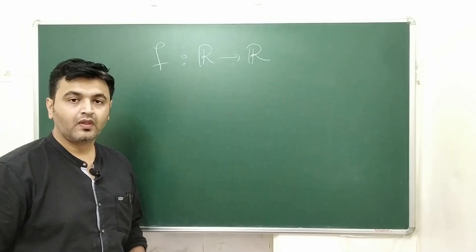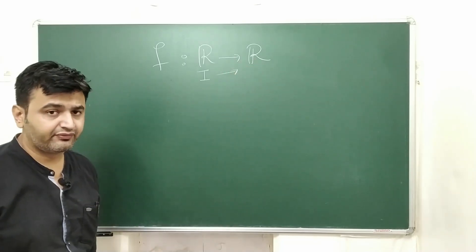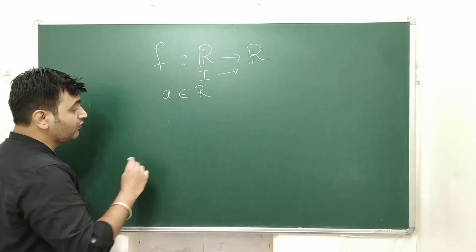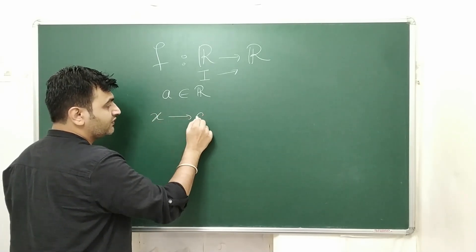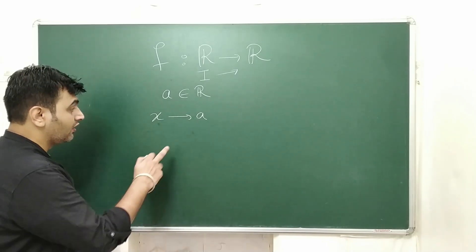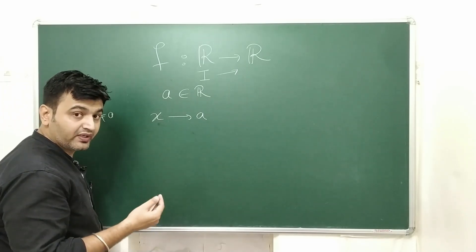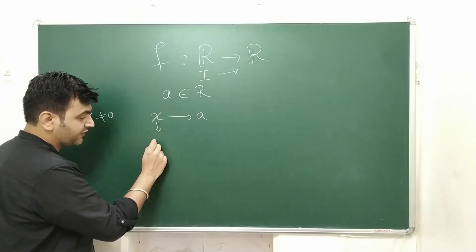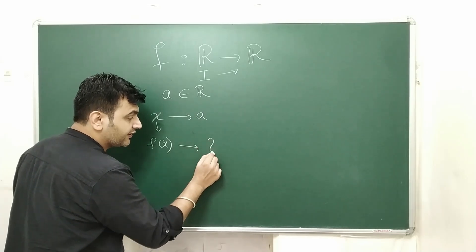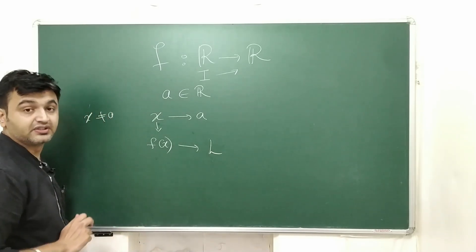Let us start with the concept of the limit of a function. Suppose you have a function f from real numbers to real numbers, or some subset of real numbers to real numbers. Now if you take an element a belonging to R in your domain, when X is approaching towards a — a is a fixed number and X is the variable approaching a, X is not equal to a — then you look at the images of those X, that means you look at f of X.